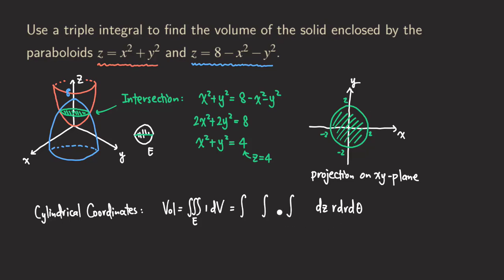For the innermost integral, the limits for z are based on the bottom surface and the upper surface. The bottom surface comes from the first paraboloid, z equals x squared plus y squared. The upper surface comes from z equals 8 minus x squared minus y squared. However, we cannot just use x squared plus y squared as the lower limit because we no longer have x and y — we have r and θ.